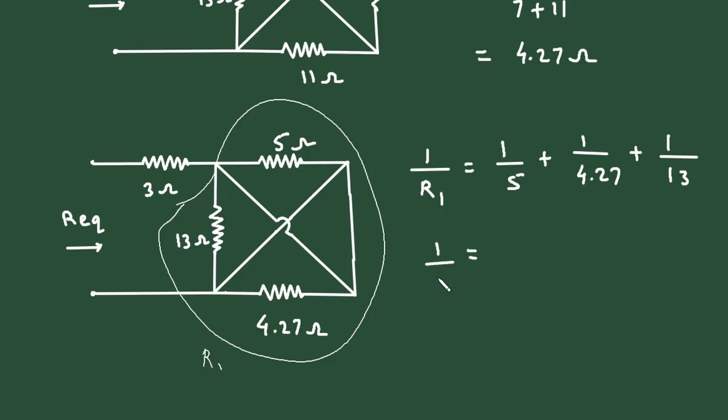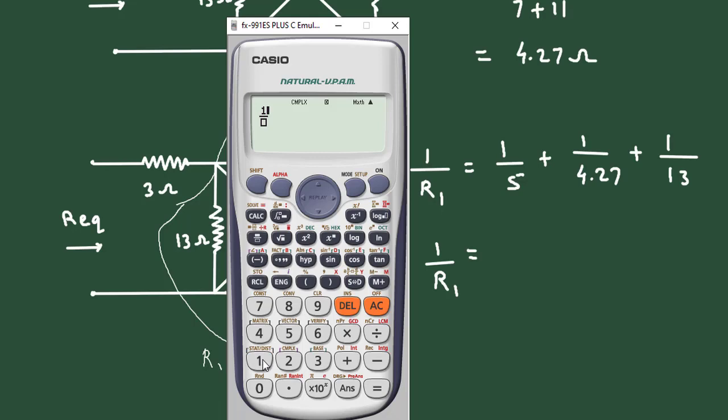It is equal to 1 over R1 equals 1 over 5 plus 1 over 4.27 plus 1 over 13.